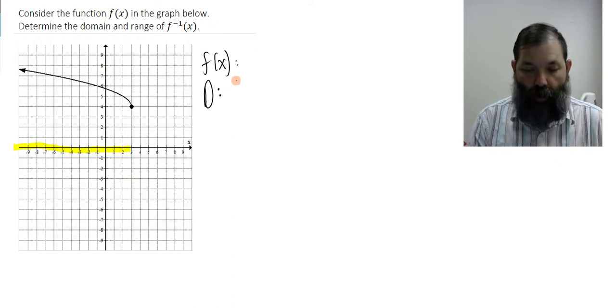So I'll write the domain as parentheses, negative infinity, comma, positive 3. And we've got a solid point there when x is 3. I'll bracket the 3.